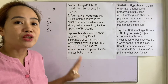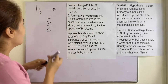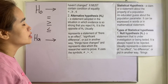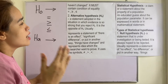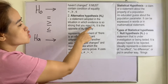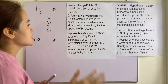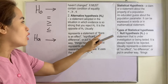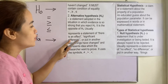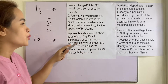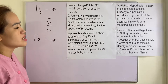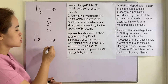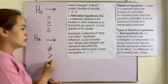The second is what we call alternative hypothesis, denoted by H sub A. It is a statement adopted in the situation in which evidence is so strong that you reject the null hypothesis. It is the opposite of the null hypothesis, and usually represents a statement of there is an effect, significant difference, or in other words, things have changed. It represents the idea which the researcher wants to prove, and uses the symbols not equal to, greater than, and less than.